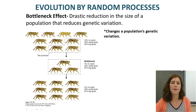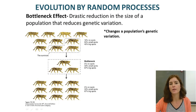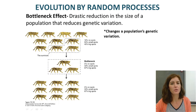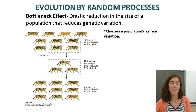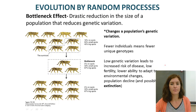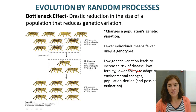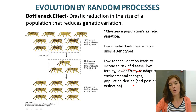The bottleneck effect occurs when population size decreases dramatically. The survivors are totally random — it may have nothing to do with adaptive traits, just a quick environmental change that doesn't allow natural selection to occur. Those survivors go through a bottleneck and reproduce using only that limited set of genes. Fewer individuals means fewer unique genotypes. Low genetic variation leads to increased risk of disease, low fertility, lower ability to adapt to environmental changes, and ultimately population decline.